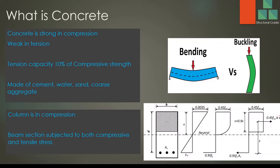What is concrete? Concrete is made of cement, water, sand, and coarse aggregate. In addition, we may use admixtures for improvement or enhancement of the properties of the concrete.